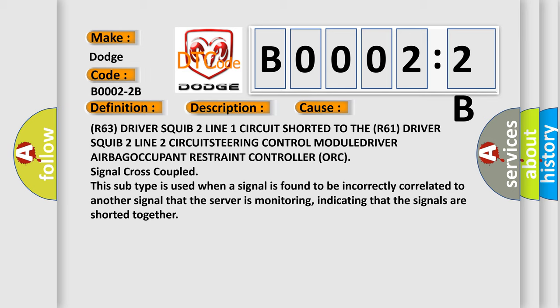This subtype is used when a signal is found to be incorrectly correlated to another signal that the server is monitoring, indicating that the signals are shorted together.